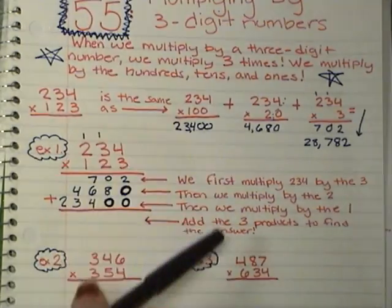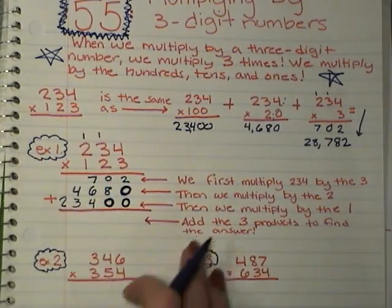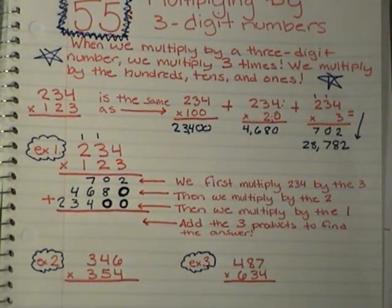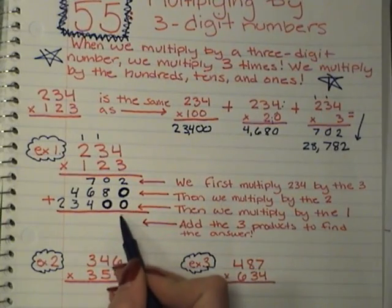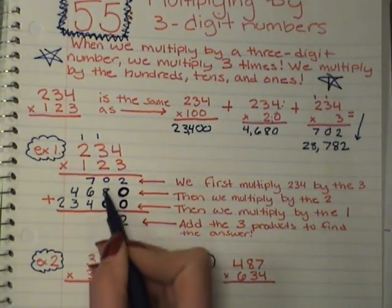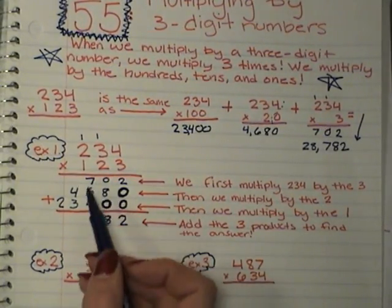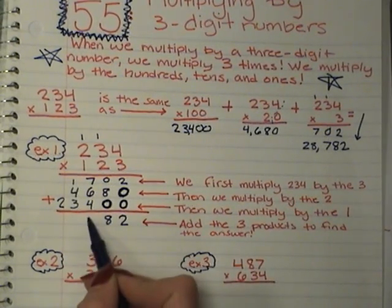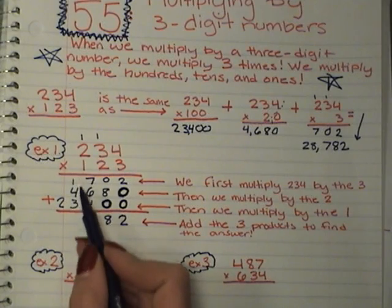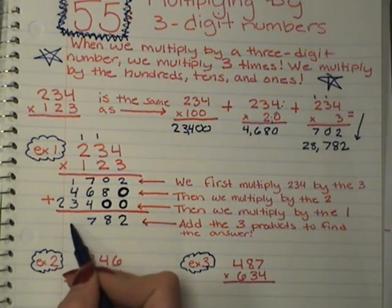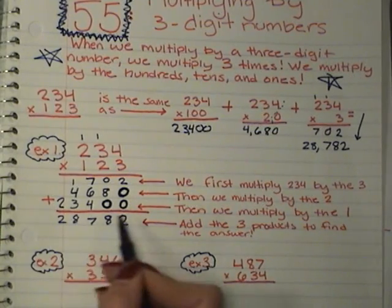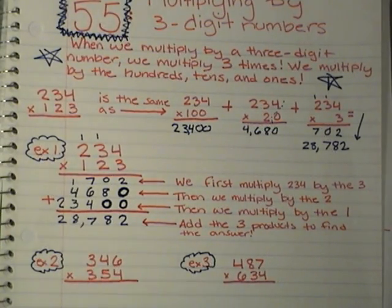Instead of writing them out, writing them out, writing them out, it's all in 1. So what did we do with all these answers? Now we add them all together. 2 plus 0, 2. 8 plus 0, 8. 6 plus 4 is 10, plus 7 is 17. 4 plus 3 plus 1 is 8. And 2. 1, 2, 3. 28,782.